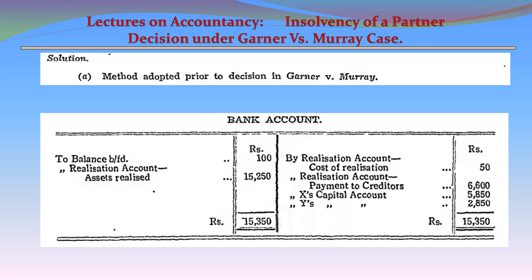Bank account: by balance brought down 100; by realization account (assets realized) 15,250. To realization account (cost of realization) 50; to realization account (payment to creditors) 6,600; to X's capital account 5,850; to Y's capital account 2,850.